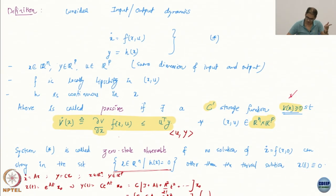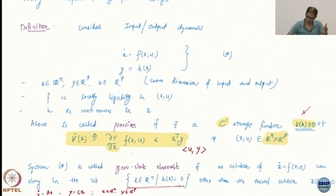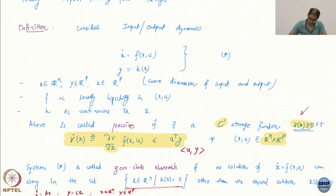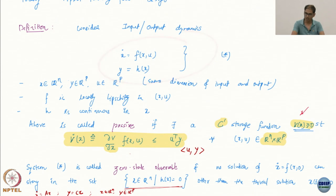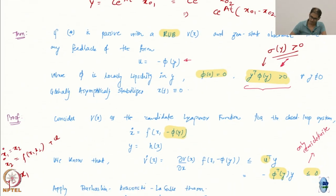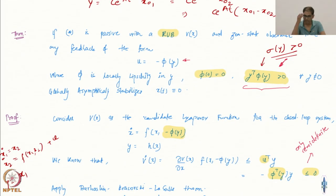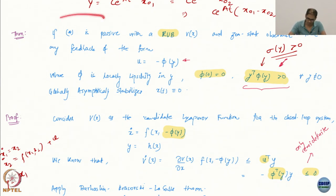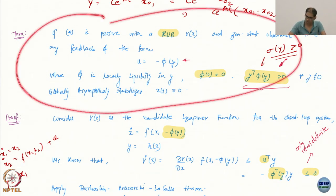Passivity and zero-state observability for this system. The system is x_dot = f(x,u), y = h(x). We are going to use this immediately to design stabilizing control — that is the theorem.